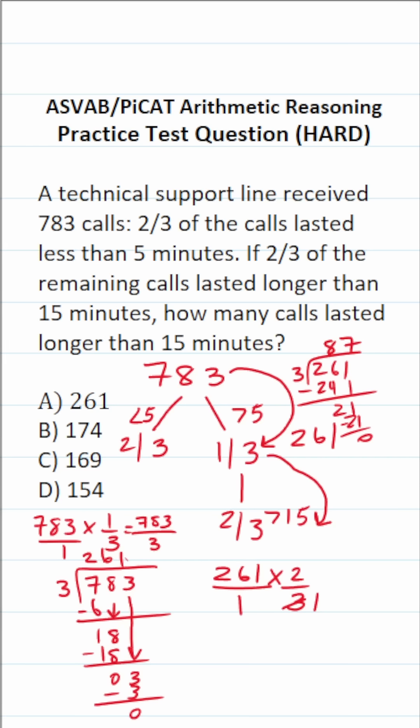Three times seven is 21 with no remainder. So three goes into three one time, three goes into 261 87 times. This becomes 87 over one, which is 87, times two over one, which is two. So all we have to do is 87 times two to get our answer.